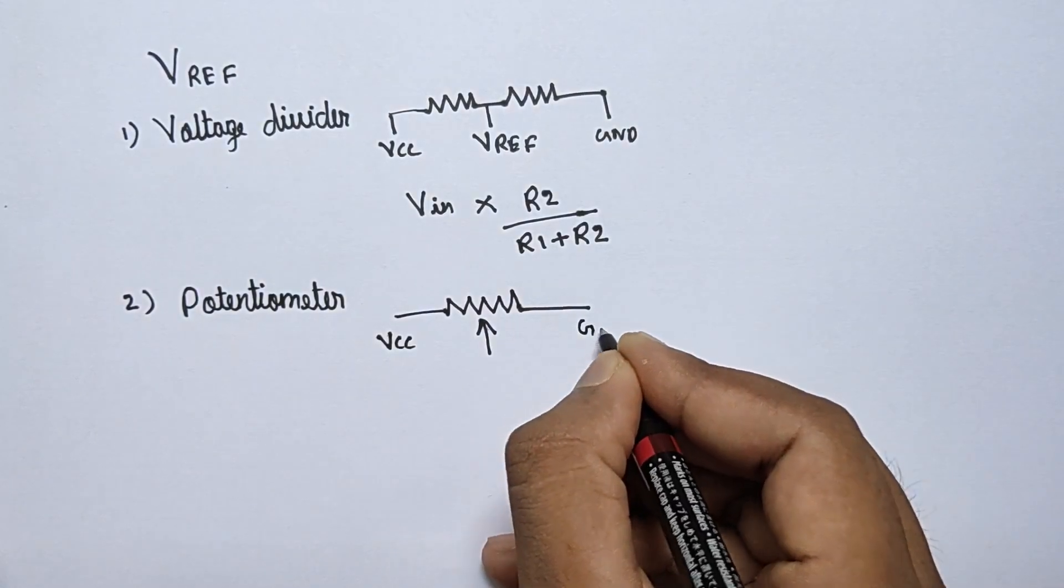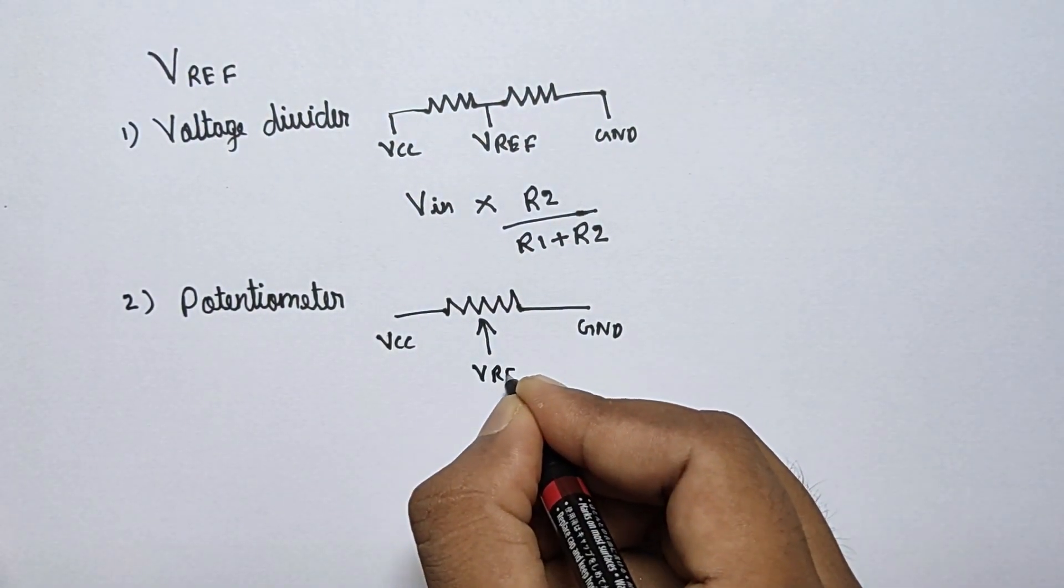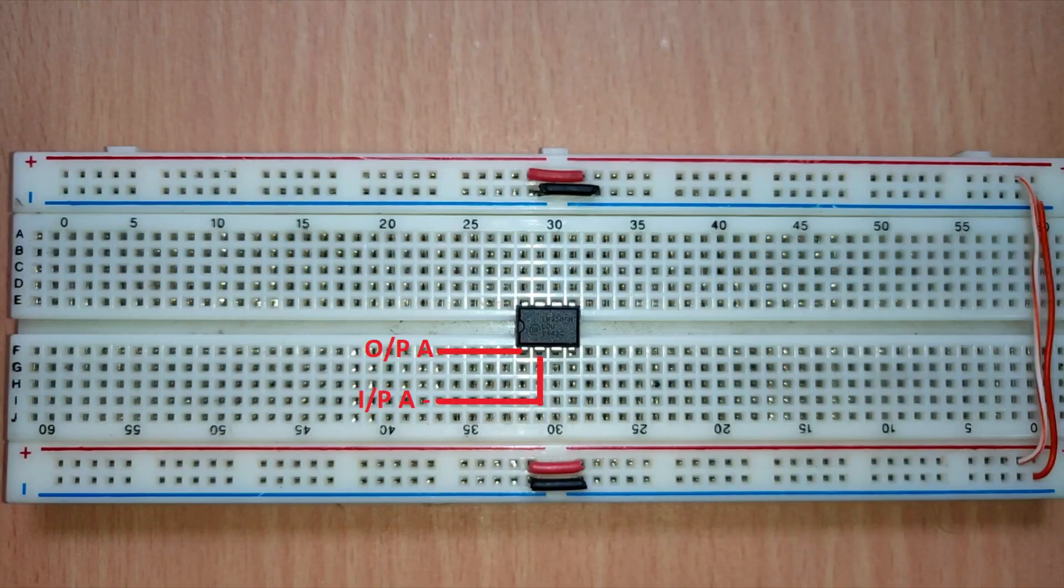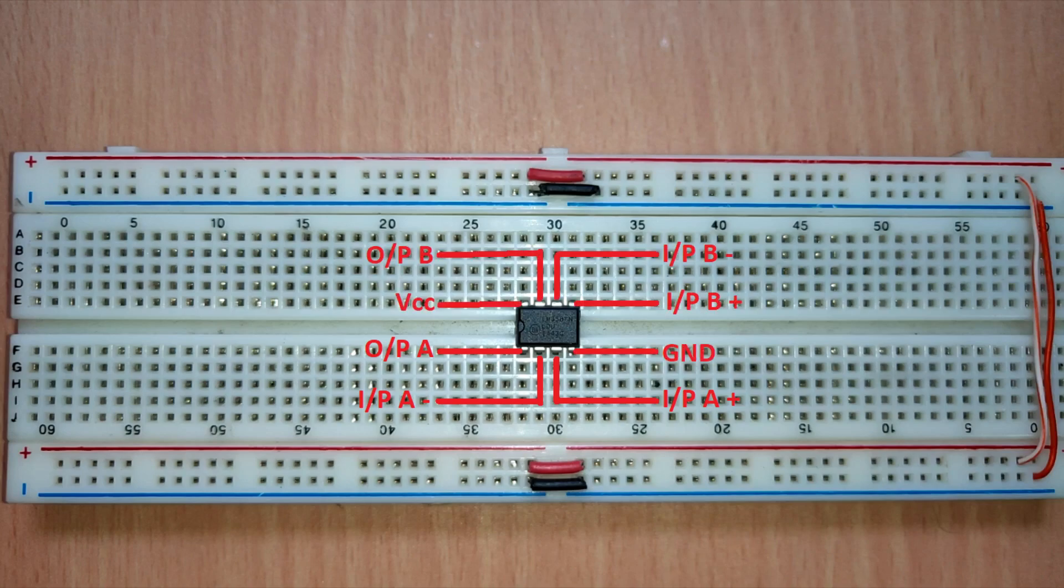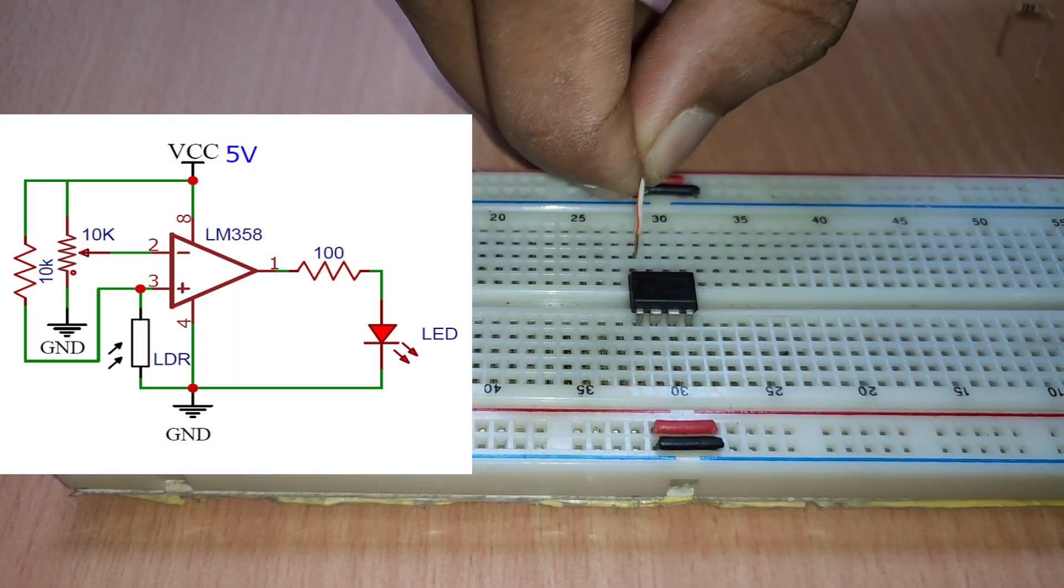Now theory out of the way, let's build the automatic street light controller by using what we have seen so far. This is the LM358 op-amp pinout. Follow the connections by referring to the circuit diagram.